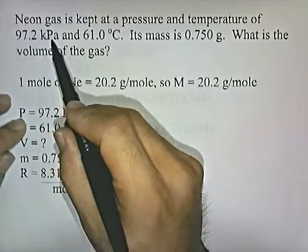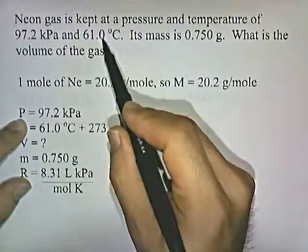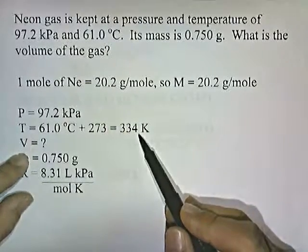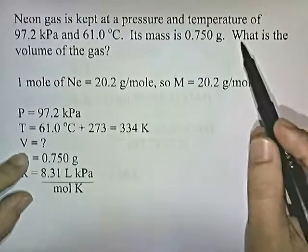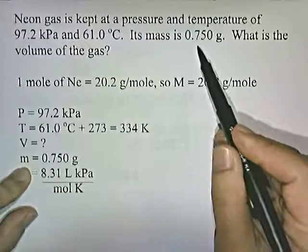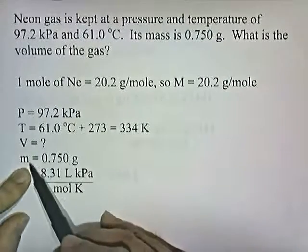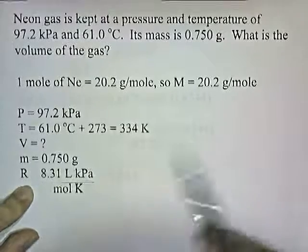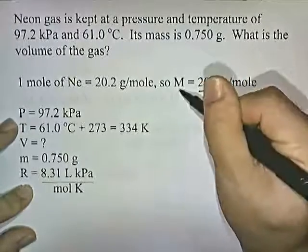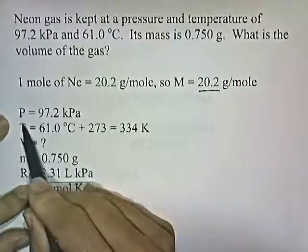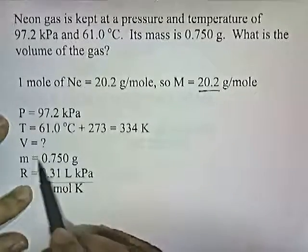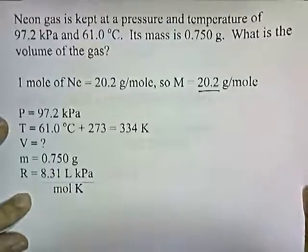Let's keep going. 97.2 kilopascals, that's pressure, that's P. 61 Celsius, that's temperature. Add 273, turn it into Kelvin. V, the volume, that's what we're asking for. The mass of gas is 0.75 grams, little m is 0.75. R is always 8.31. If I put this in place of M in the formula, that in place of P, that in place of T, 0.75 in place of little m, and 8.31 in place of R, this is what it looks like.